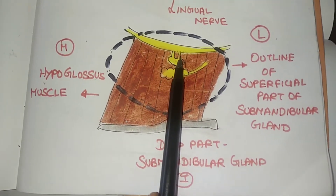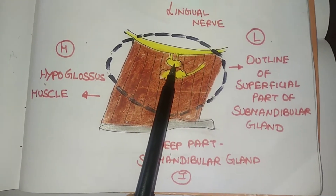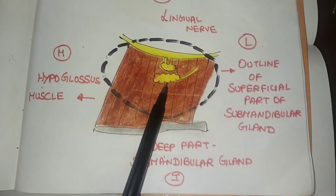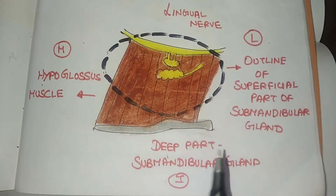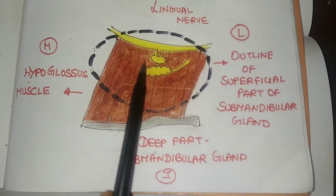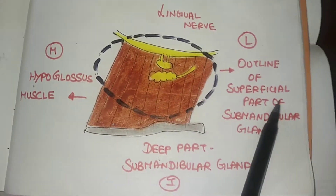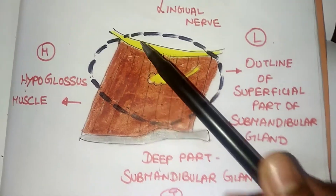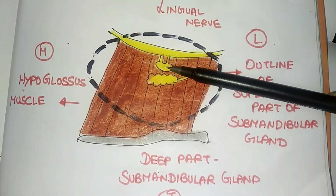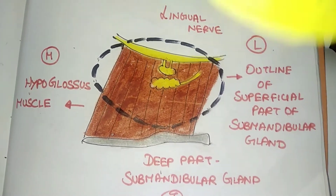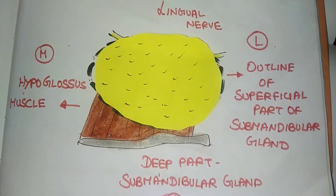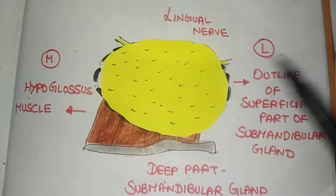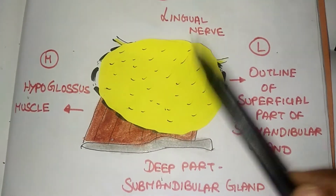The lingual nerve is the above relationship of the submandibular ganglion. The below relation is the deeper part of the submandibular gland. The medial relation is the hyoglossus muscle — shown here in brown color. The lateral relation is the superficial part of the submandibular gland.